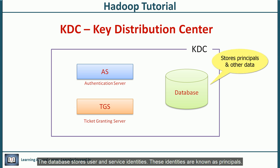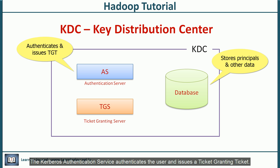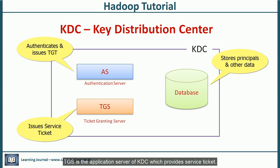The database stores user and service identities, known as principals. The KDC database also stores other information like an encryption key, ticket validity duration, expiration date, etc. The Kerberos authentication service authenticates the user and issues a ticket granting ticket (TGT). If you have a valid TGT, it means the authentication server has verified your credentials. TGS is the application server of KDC, which provides service tickets. Before accessing any service on the Hadoop cluster, you need to get a service ticket from TGS.